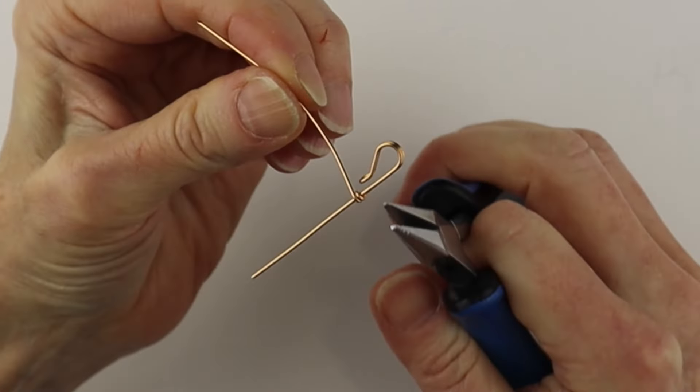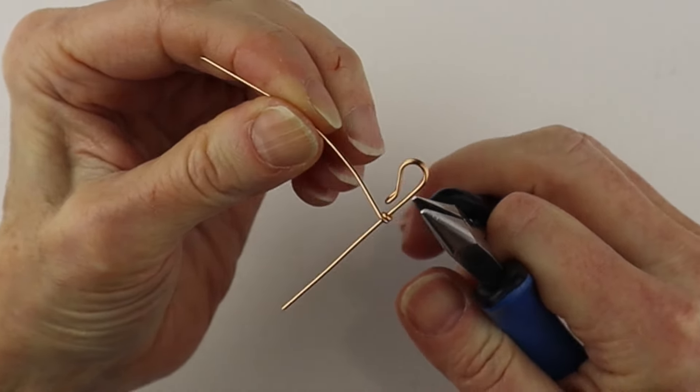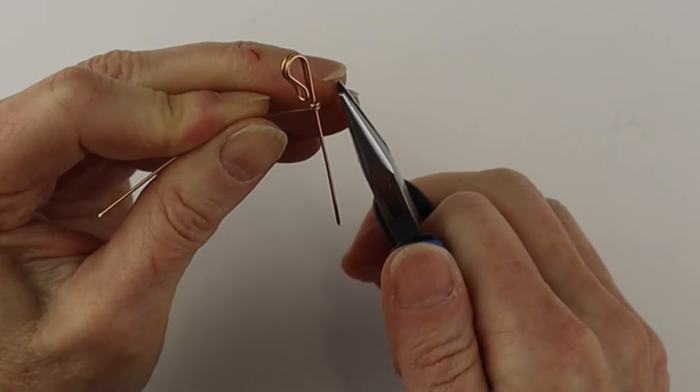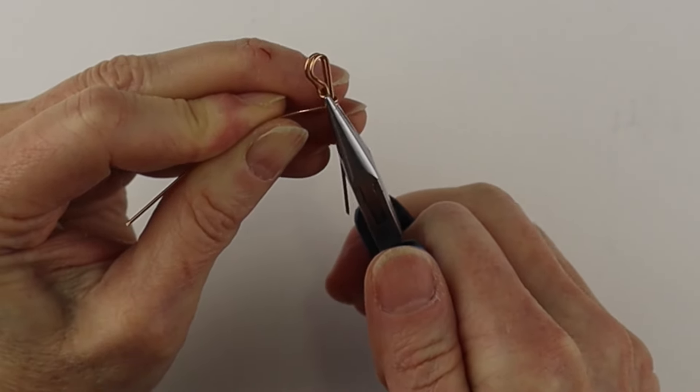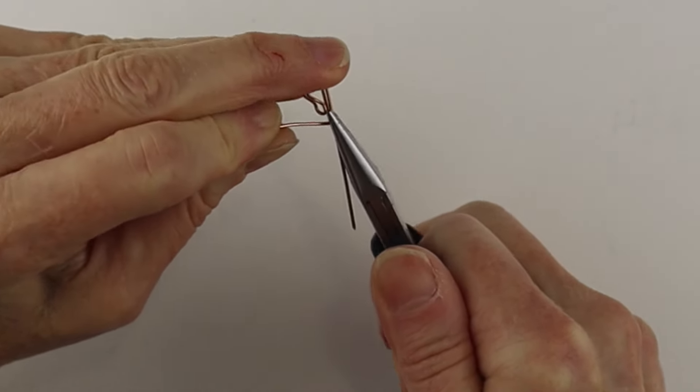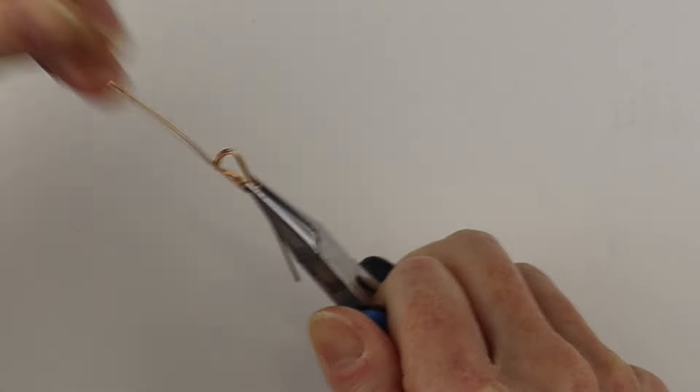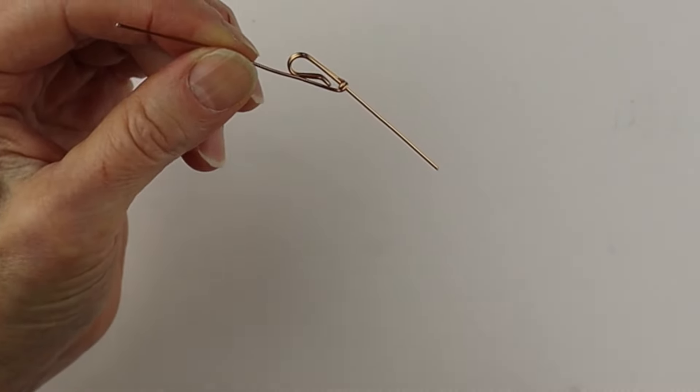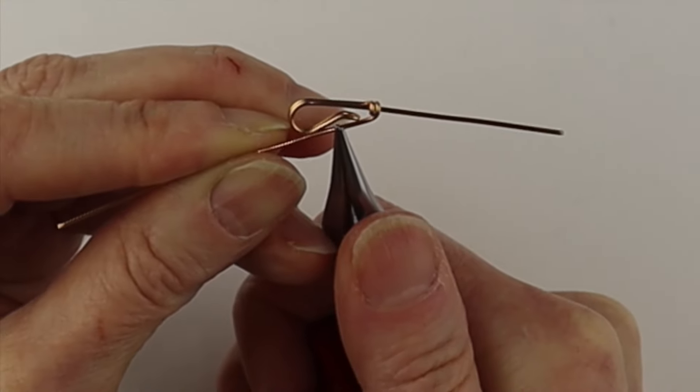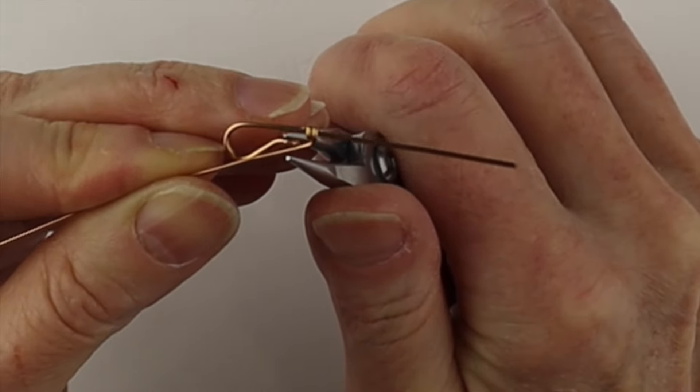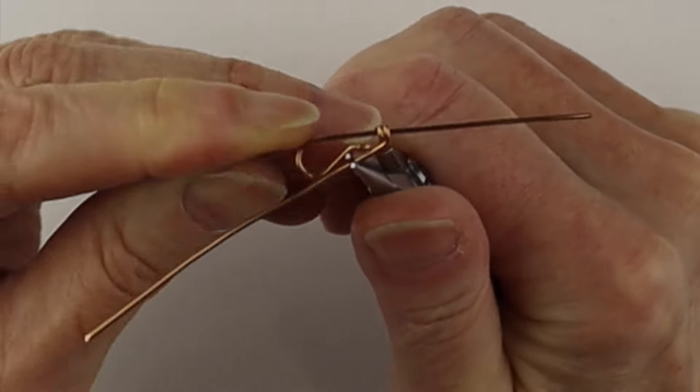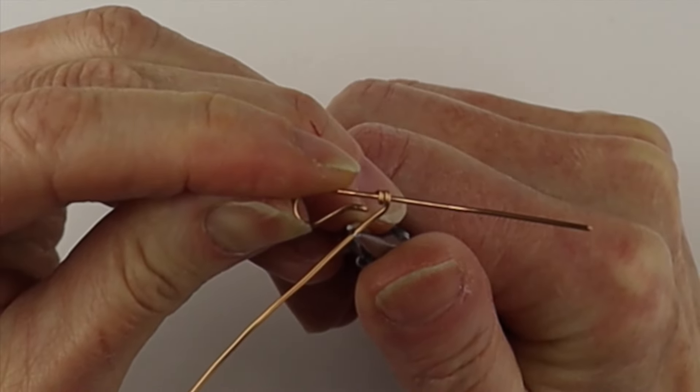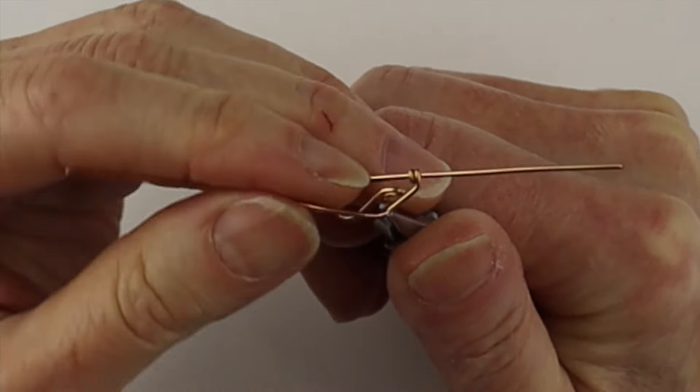About here you can give it a little pinch so it's just in the center there. Then we're just going to hold it with the flat pliers and bend it straight up. This wire is much longer than what we need.